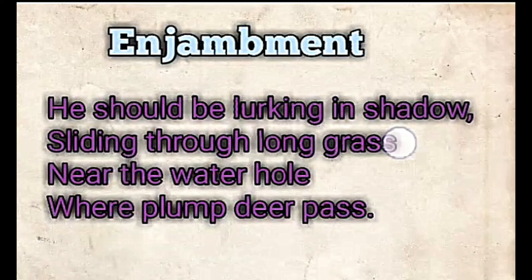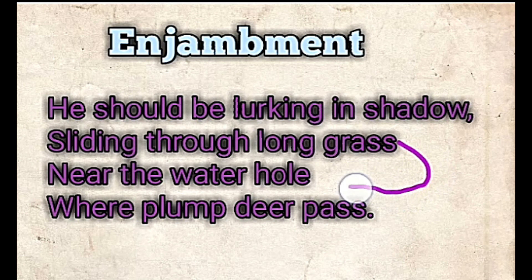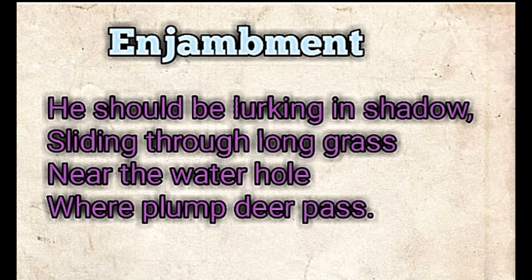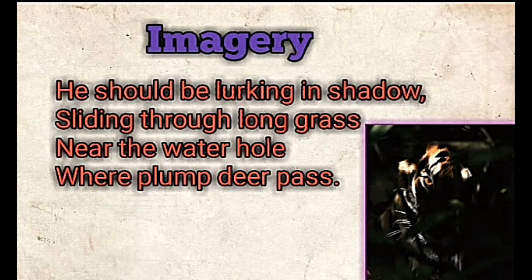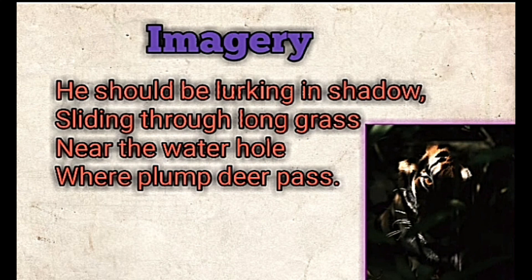Let us see the enjambment here. We can see that the second line continues directly into the third line without any punctuation mark. Enjambment means a sentence continues to the next line without any punctuation mark like a full stop or comma. There is also imagery here — the poet is creating an image of a tiger hiding in the shadow, waiting for its prey.